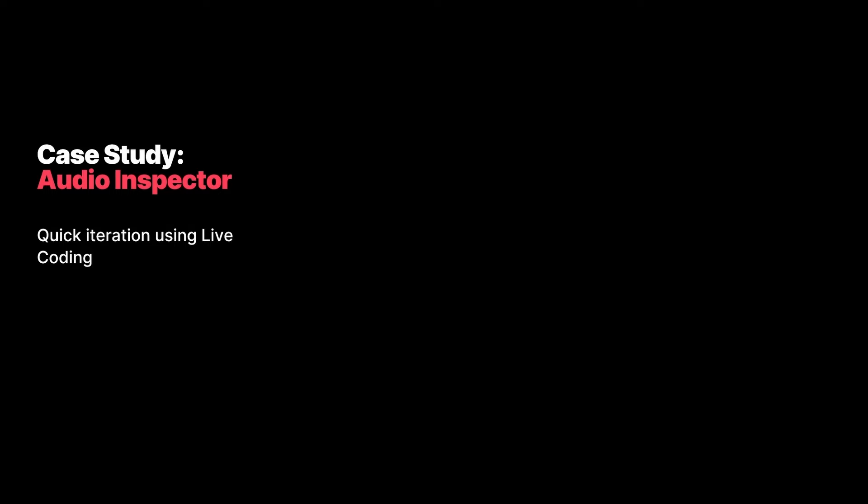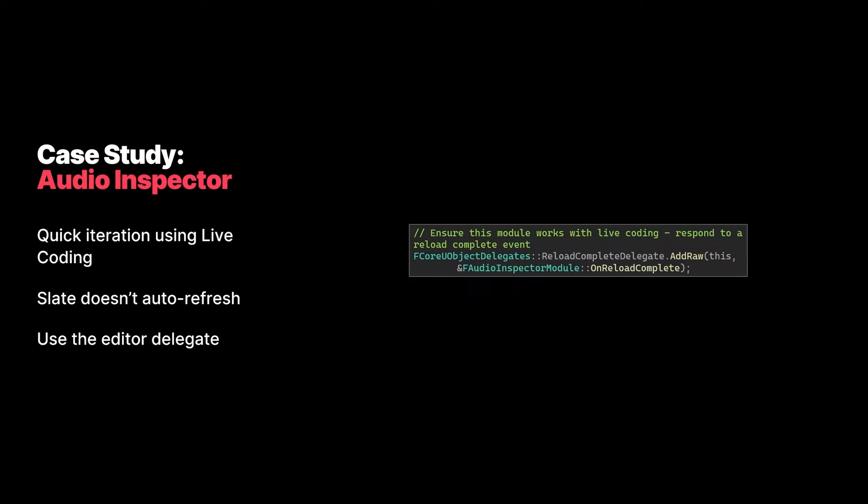I wanted to make the best use of live coding to increase iteration speed, because live coding is absolute gold for programmer productivity. However, Slate doesn't really support auto-refresh because its layouts are constructed up front and remain in memory — which is a good thing; I wouldn't want the whole editor rebuilding itself every time I made a code change. So the module subscribes to the reload complete delegate and recreates the Audio Inspector when that happens. This isn't ideal as it listens to all reload events raised even from different modules — something we need to work on, though a more specific live coding delegate has been introduced in recent engine versions.